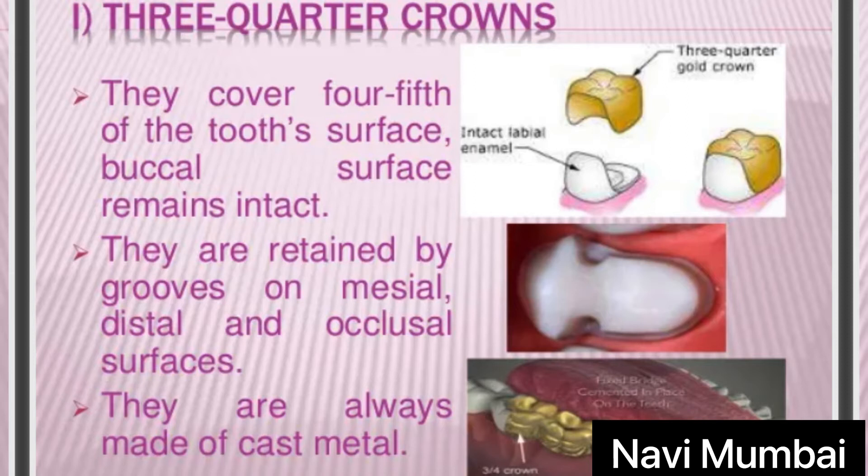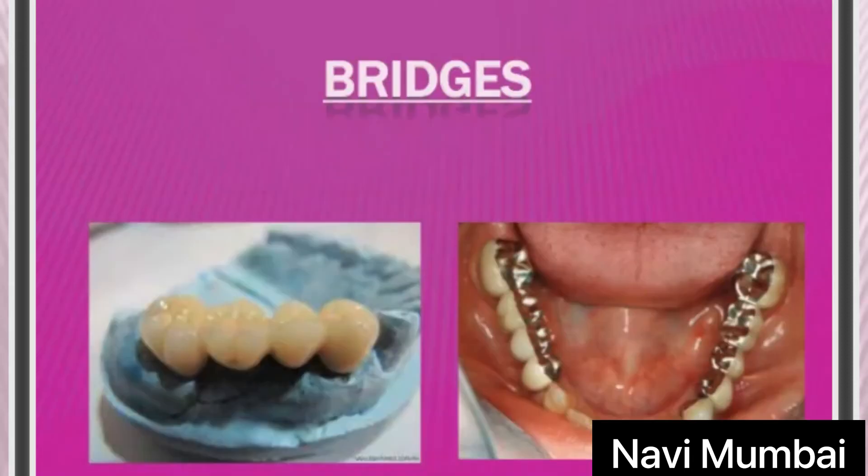Now the posterior partial crowns — that is the three-quarter crowns. Three-quarter crowns cover only four-fifths of the tooth surfaces. The facial surface — the surface that is visible, called the buccal surface — remains intact.